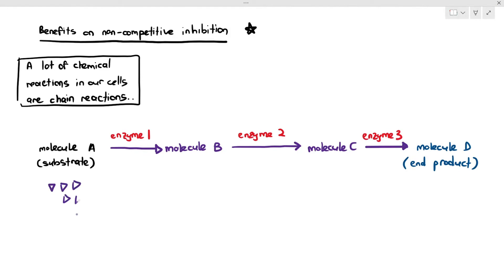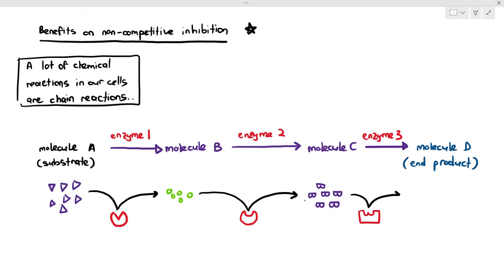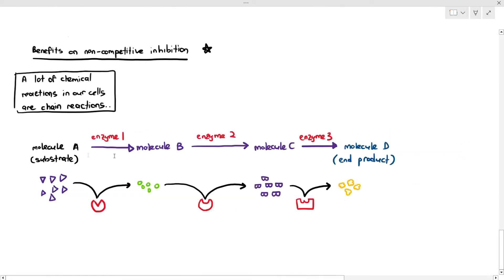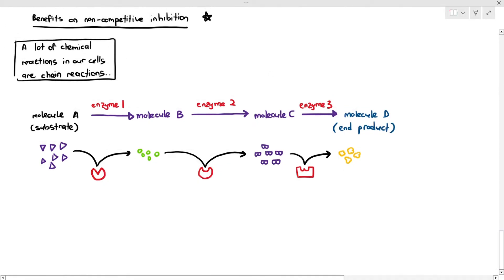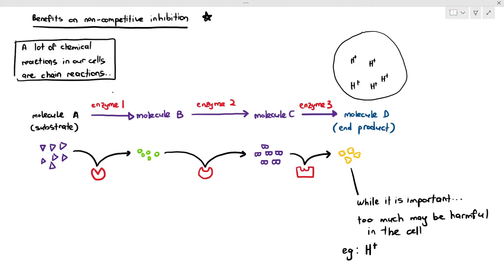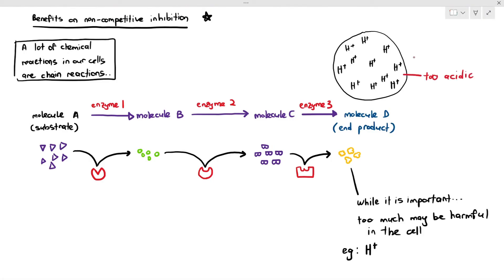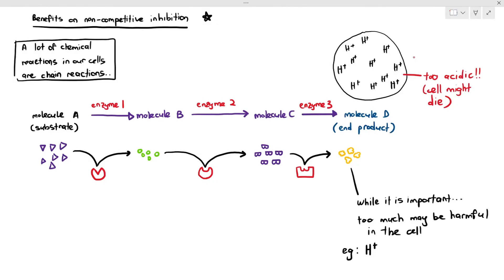Molecule A binds to the active site of enzyme 1 and is converted to B; B binds to enzyme 2 and is converted to C; C binds to enzyme 3 and is converted into D. While it is important to form end products, too much end product can be harmful. For example, if the end product is hydrogen ions, too many can make the cytoplasm too acidic and the cell might die.